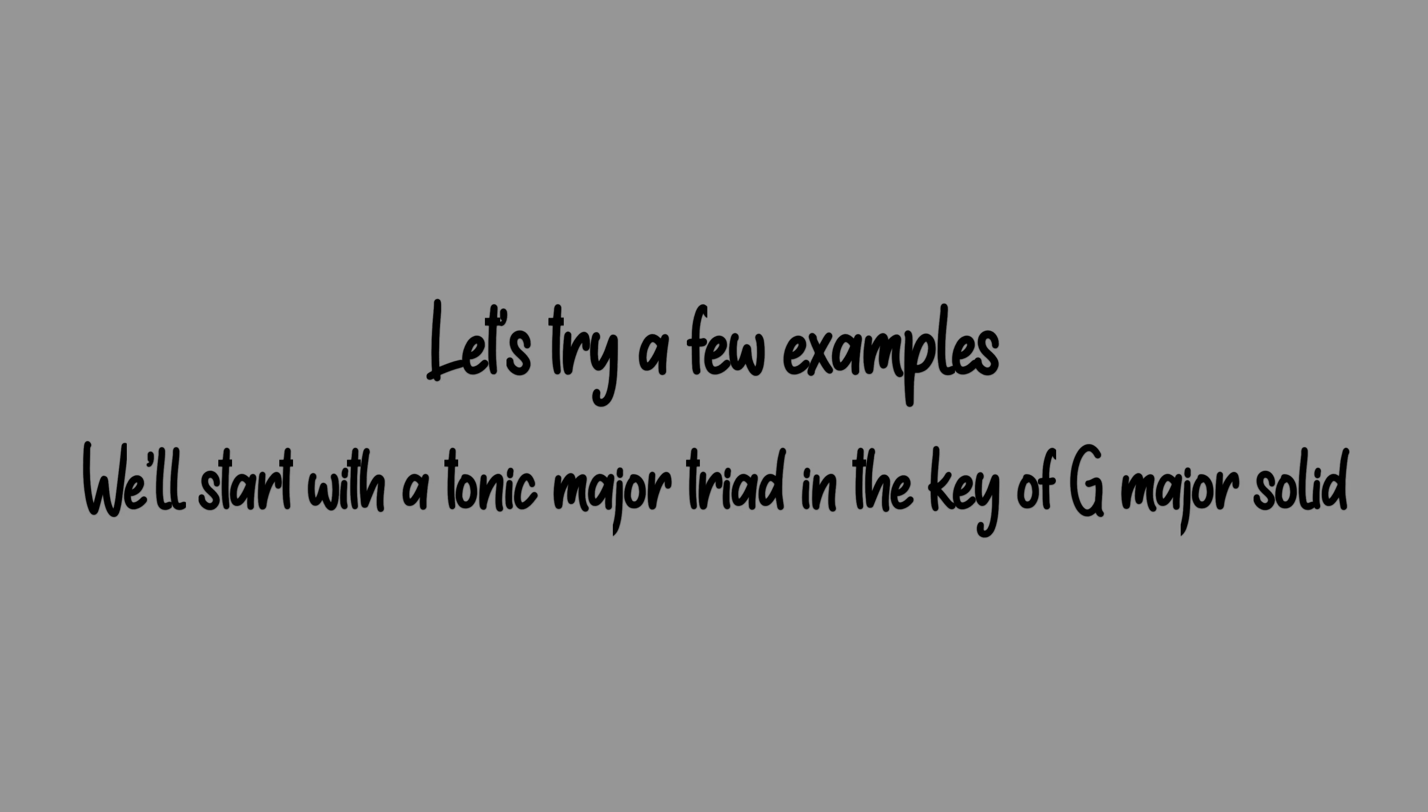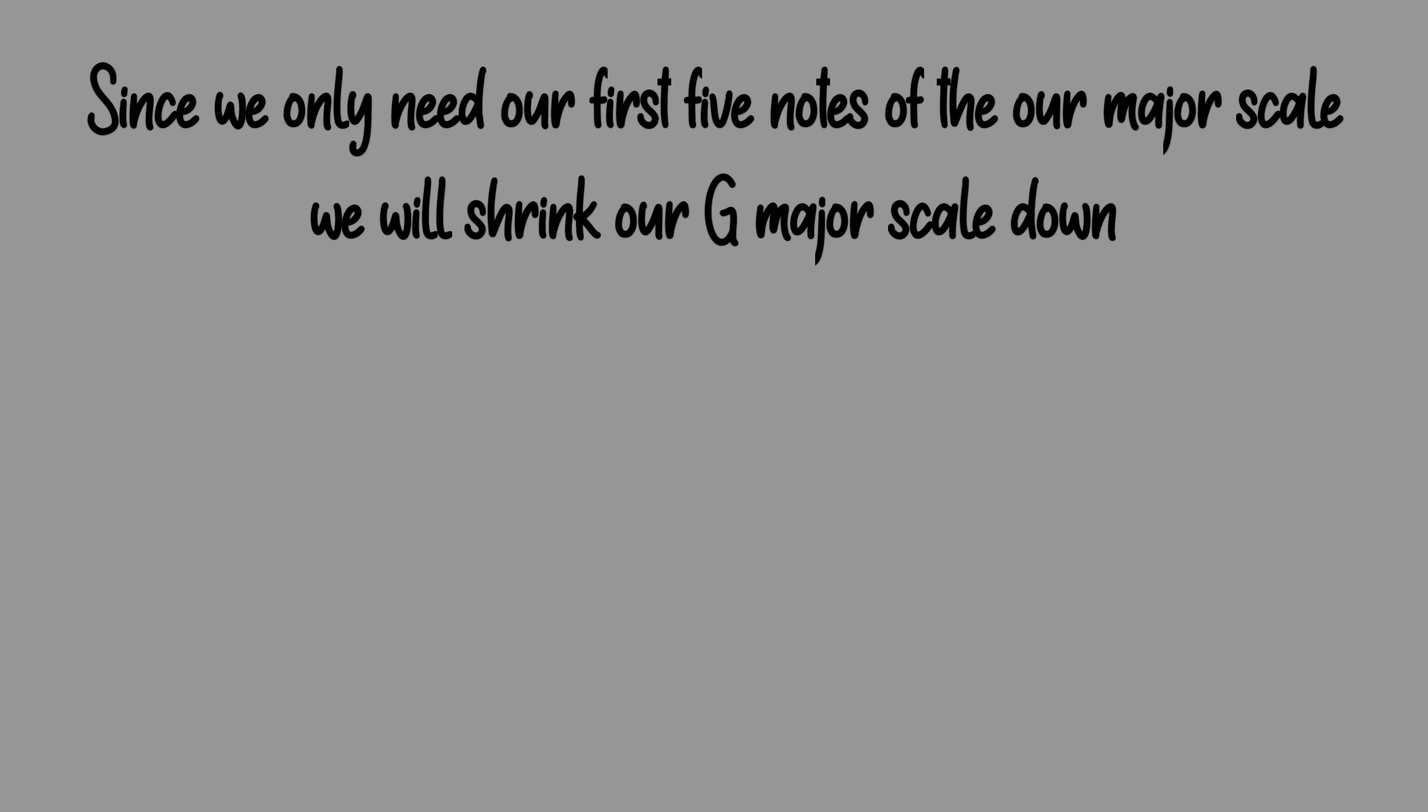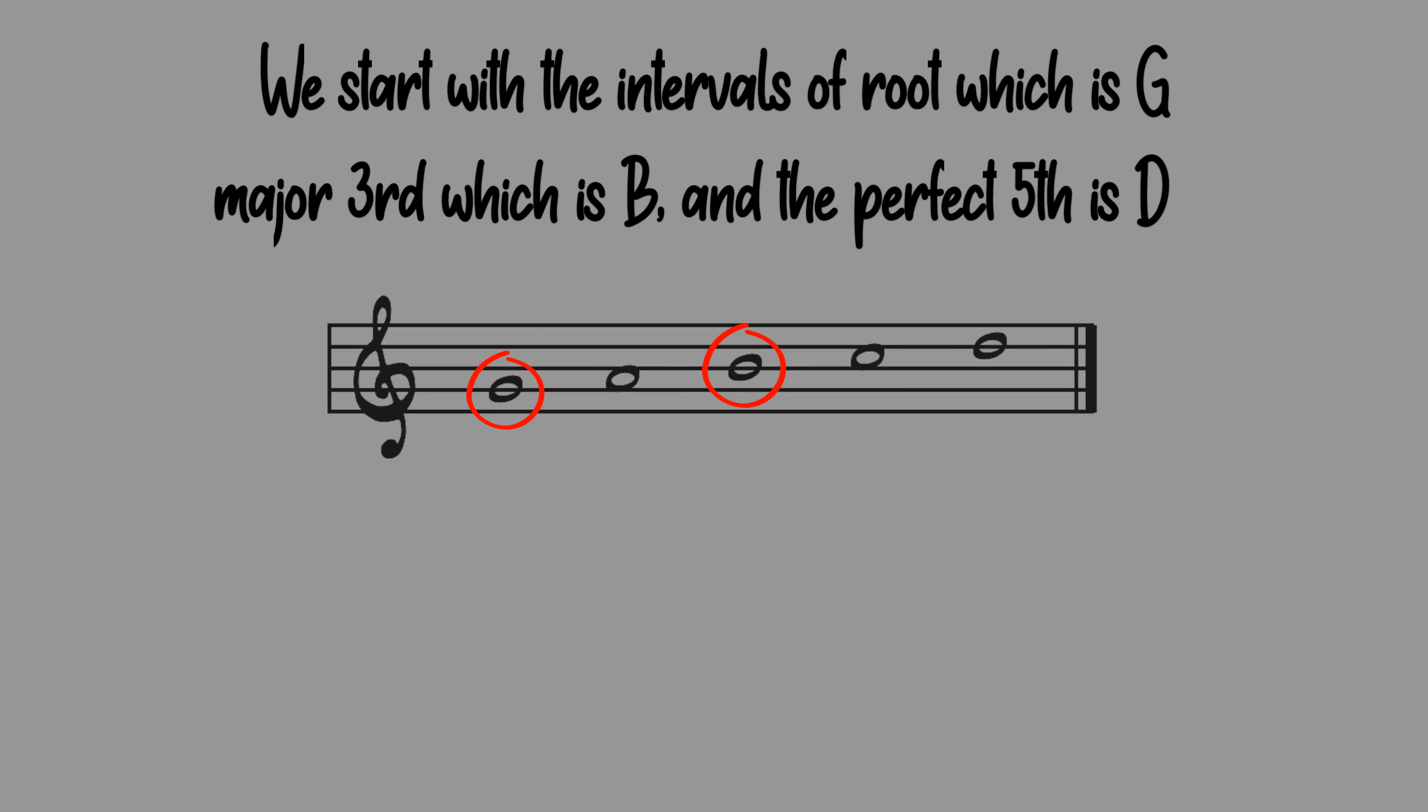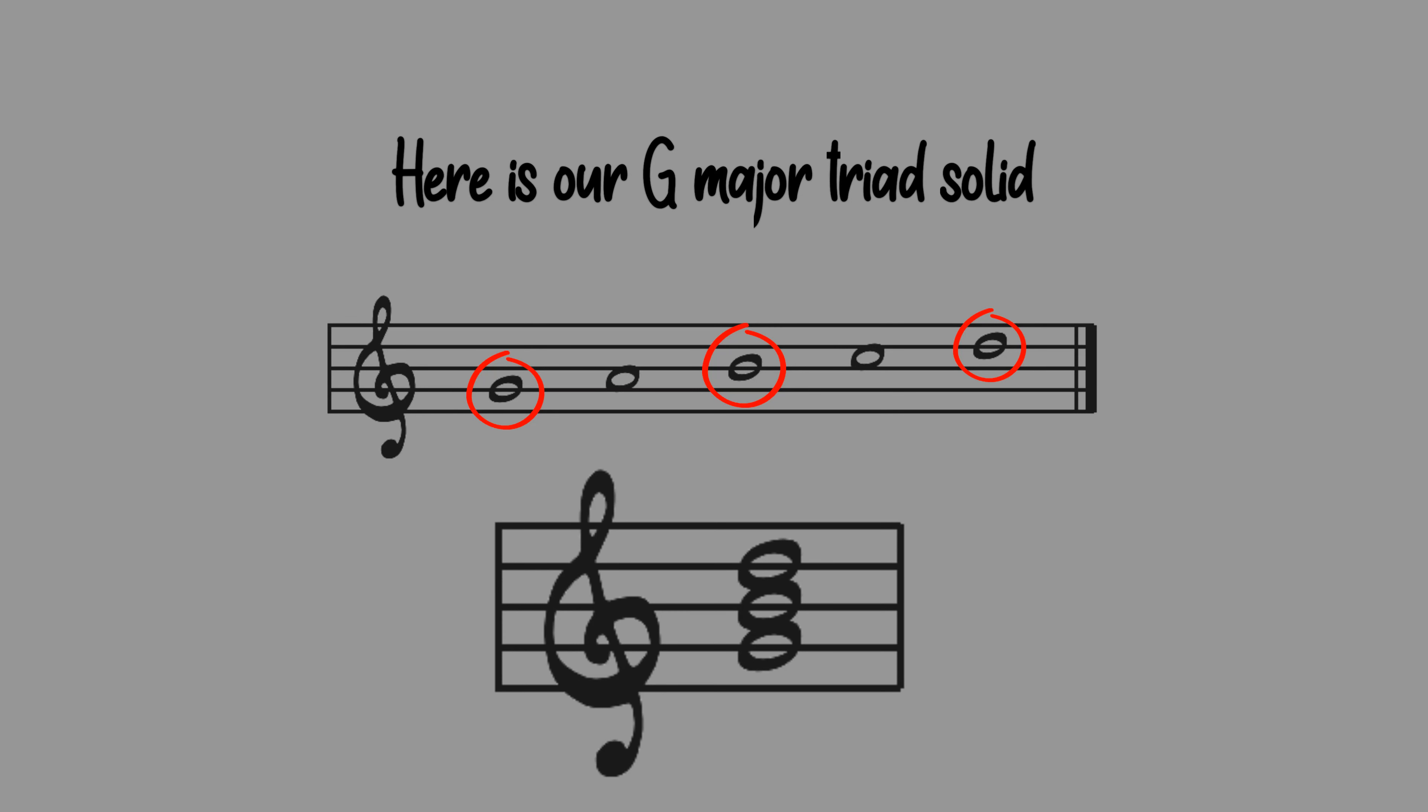We'll start with a tonic major triad in the key of G major solid. Since we only need the first five notes of our major scale we will shrink our G major scale down. We start with the intervals of root which is G, major third which is B, and the perfect fifth which is D. Here is our G major triad solid.